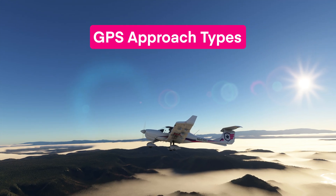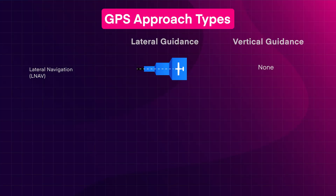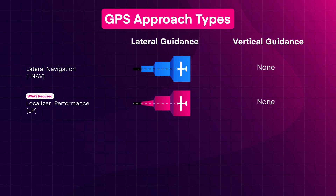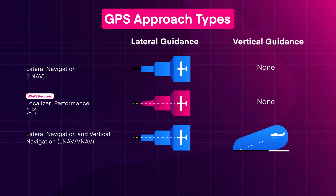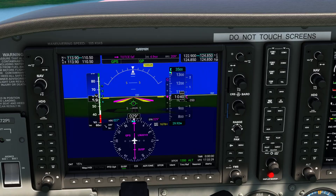GPS approaches fall into four types: Lateral Navigation or LNAV, Localizer Performance or LP, Lateral Navigation and Vertical Navigation or LNAV-VNAV, and Localizer Performance with Vertical Guidance or LPV.